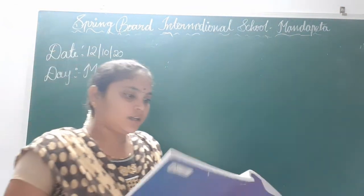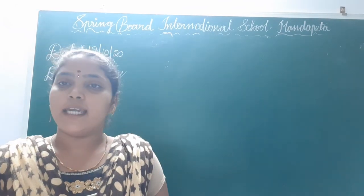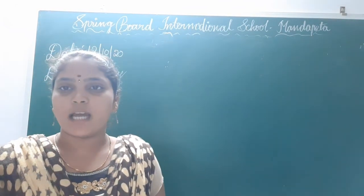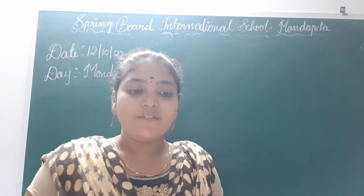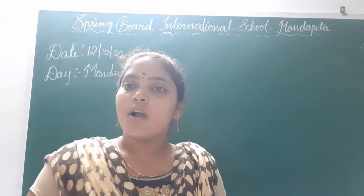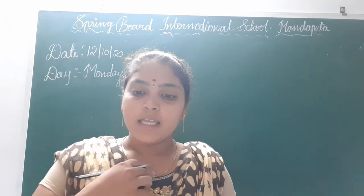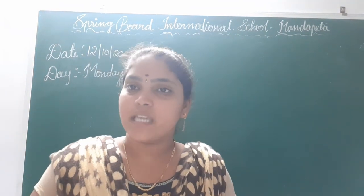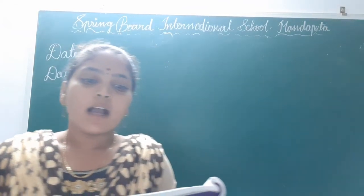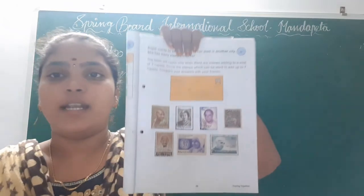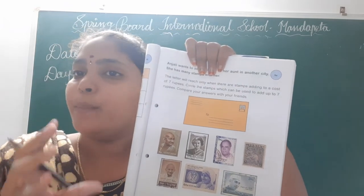Open companion page number 39. Anjali wants to send a letter to her aunt in another city. She has many stamps with her. The letter will reach only when the stamps add up to a cost of 7 rupees. Circle the stamps which can be used to add up to 7 rupees, and compare your answer with your friends.